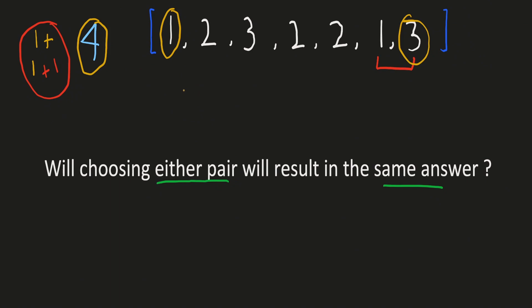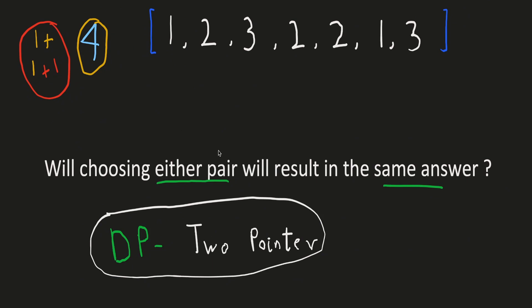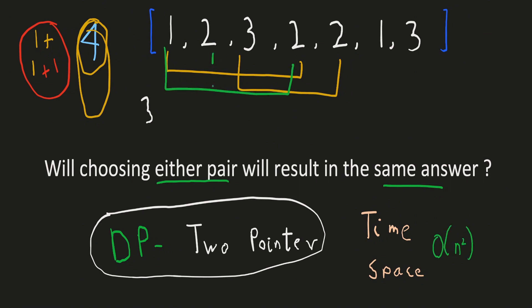You can notice that we need two different approaches: a dynamic programming solution combined with a two-pointer solution. We cache results for the three different starting values, and using the two-pointer technique, we cache the result for each starting and ending index in the array. Whichever of the three starting scores results in the maximum number of pairs will be our answer. The time complexity of this solution is O(n²), because we cache results for each pair of starting and ending positions.